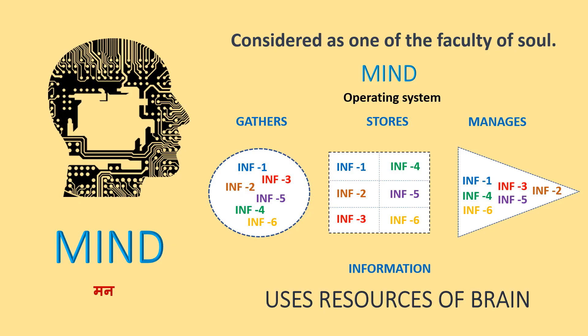Mind is the operating system that gathers, stores, and manages information, and at the same time it uses the hardware of the human computer — that is the brain. Mind uses the processing resources of the brain. What would you do with a computer that has no software? If the operating system is missing, the computer is useless. Similarly, if mind is absent from the brain, then the brain is called dead — it is of no use.